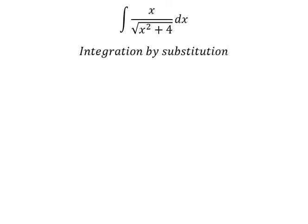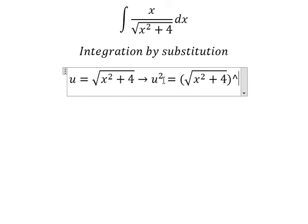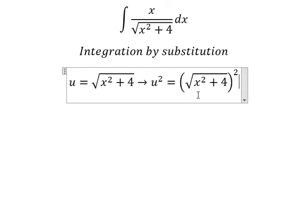So I will put u equals to this one. Later, we put the square for both sides to cancel the square root.